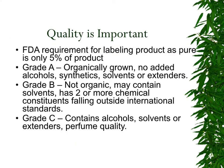Quality is really important. The FDA requirement for labeling a product as pure only requires it to have 5% of the actual product. There are three main grades of essential oils. Grade A are those oils that are organically grown, with no alcohol, synthetics, solvents, or extenders. Grade B are non-organic and may contain solvents with two or more chemical constituents falling outside of international standards. Grade C contains alcohol, solvents, or extenders — essentially perfume quality. If you want any therapeutic response from the body, it must come from grade A essential oils.